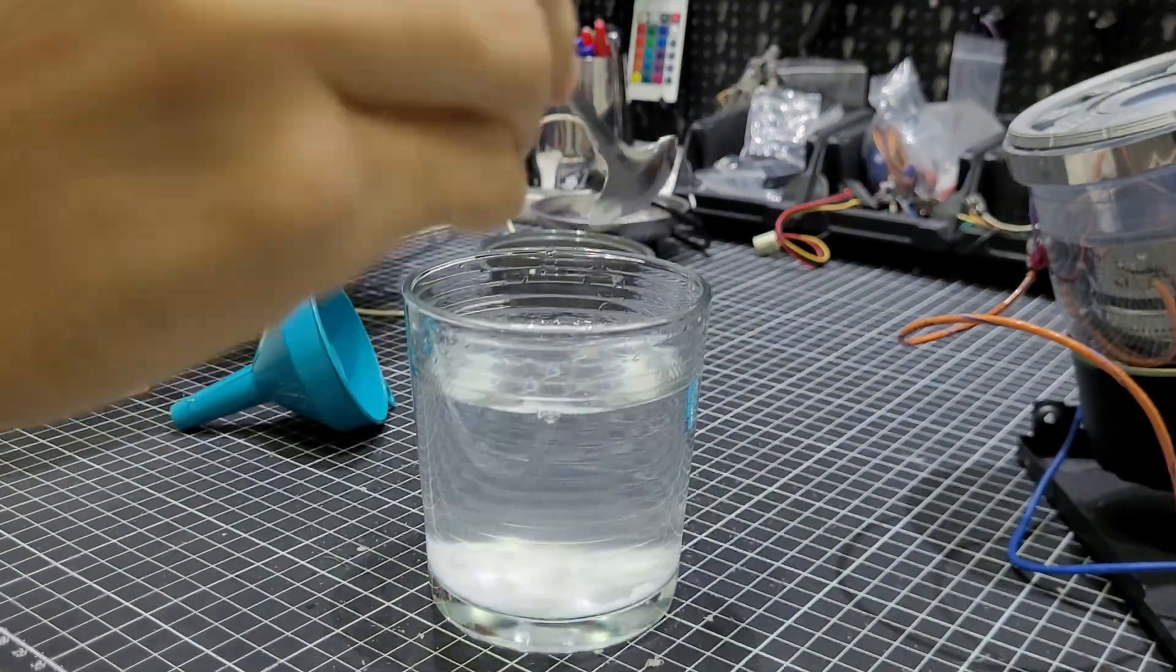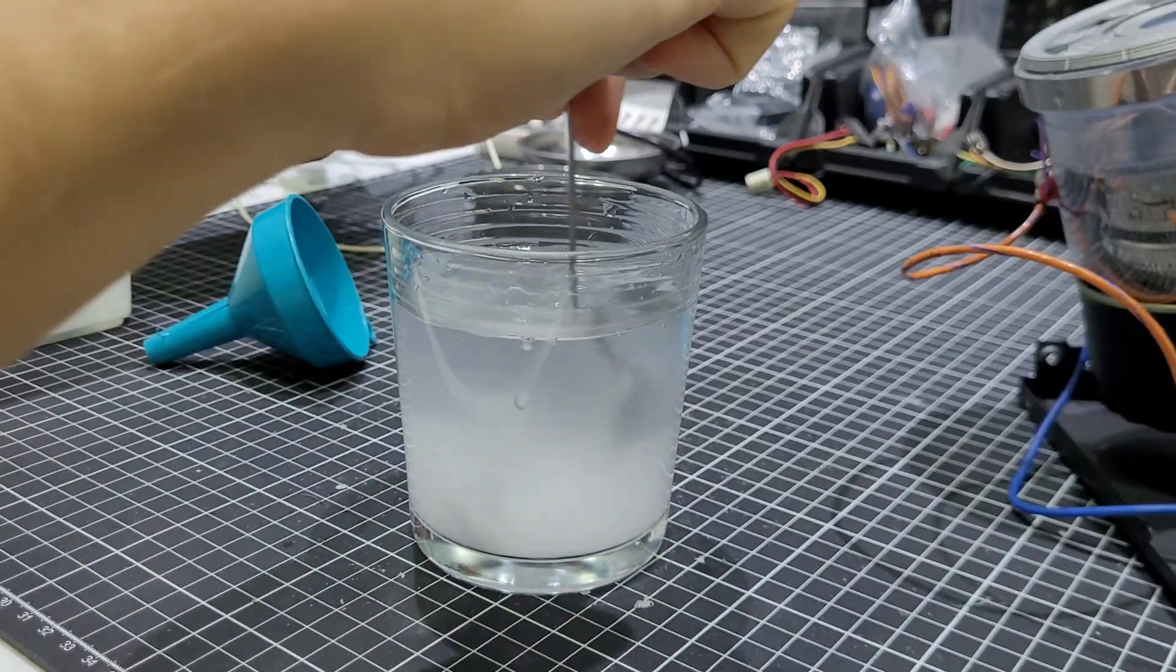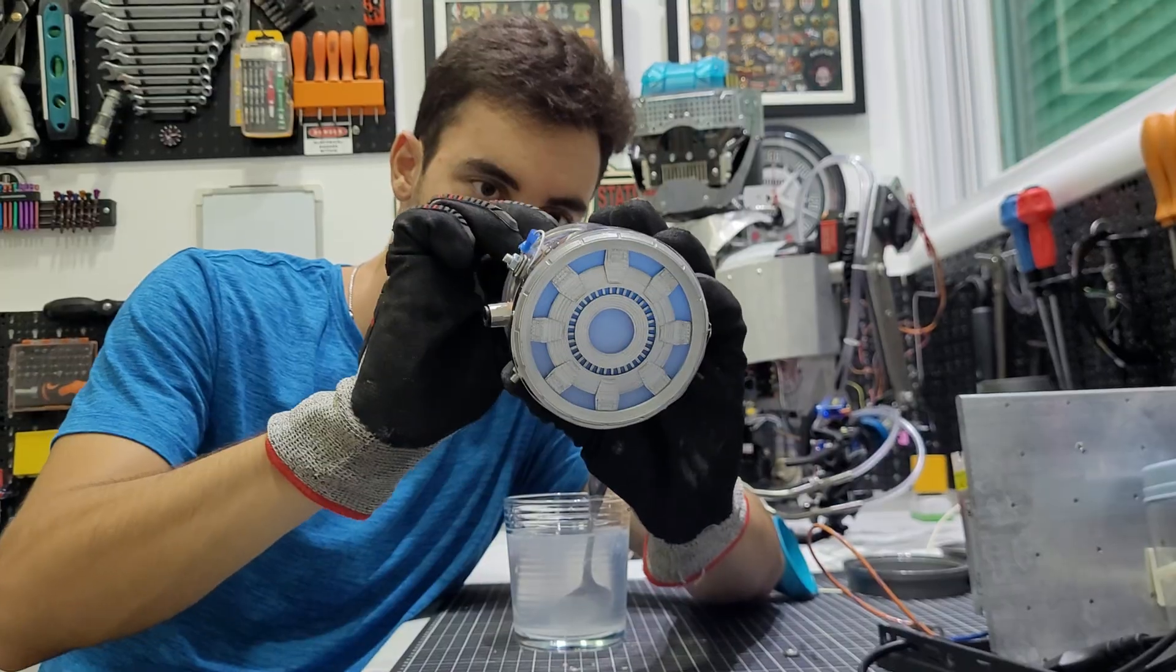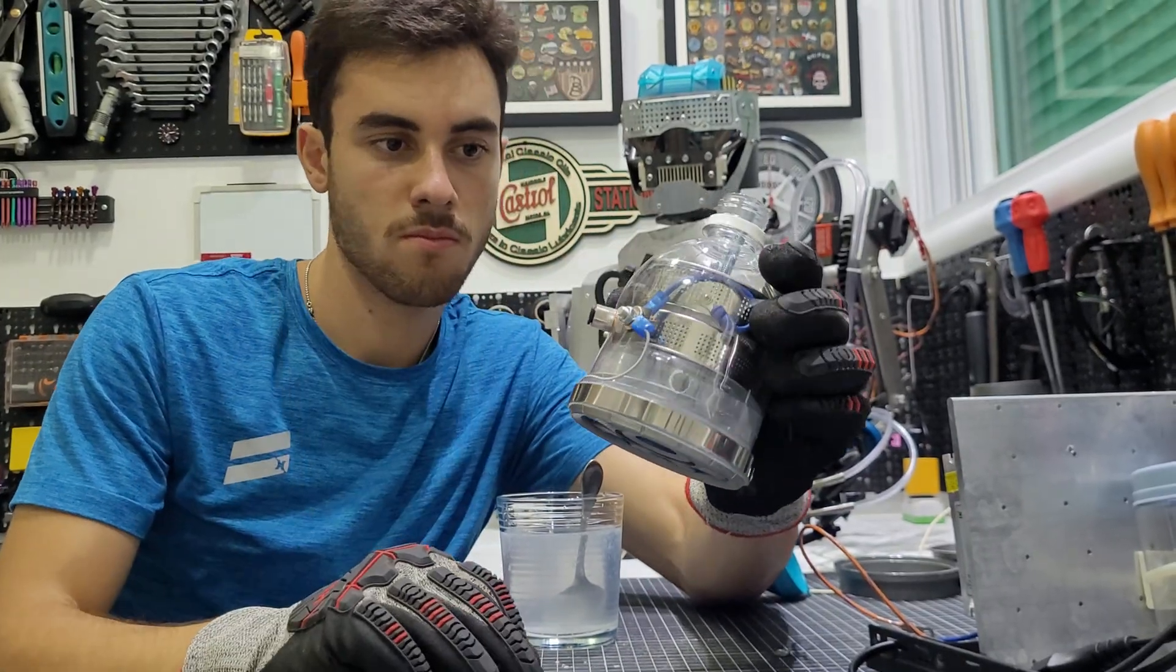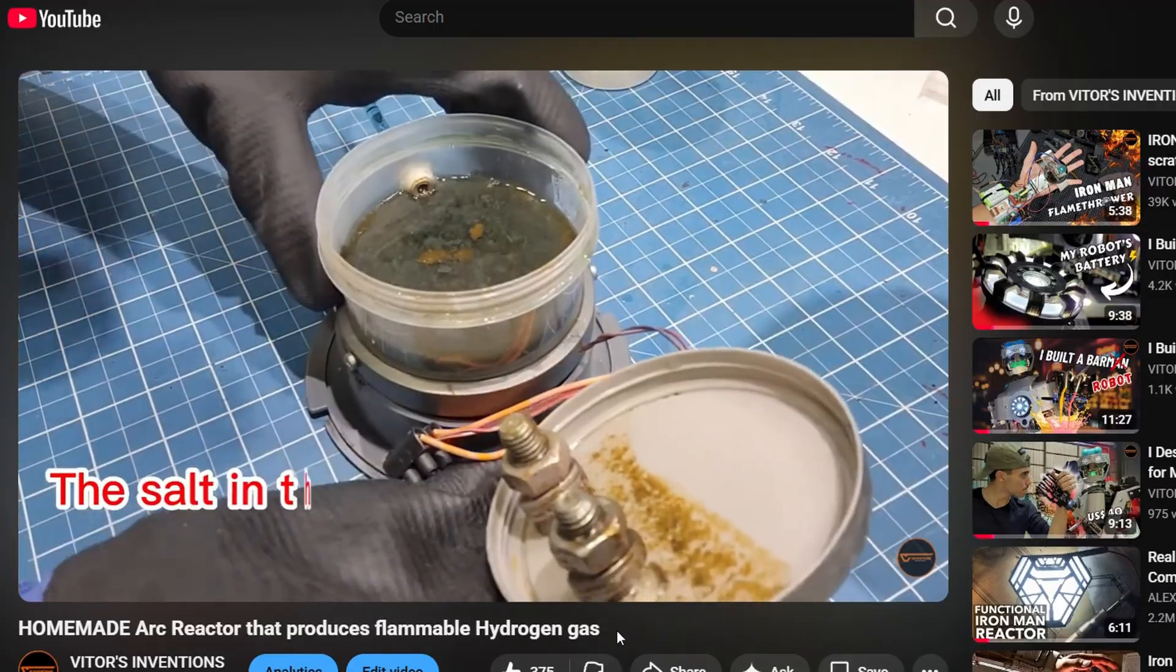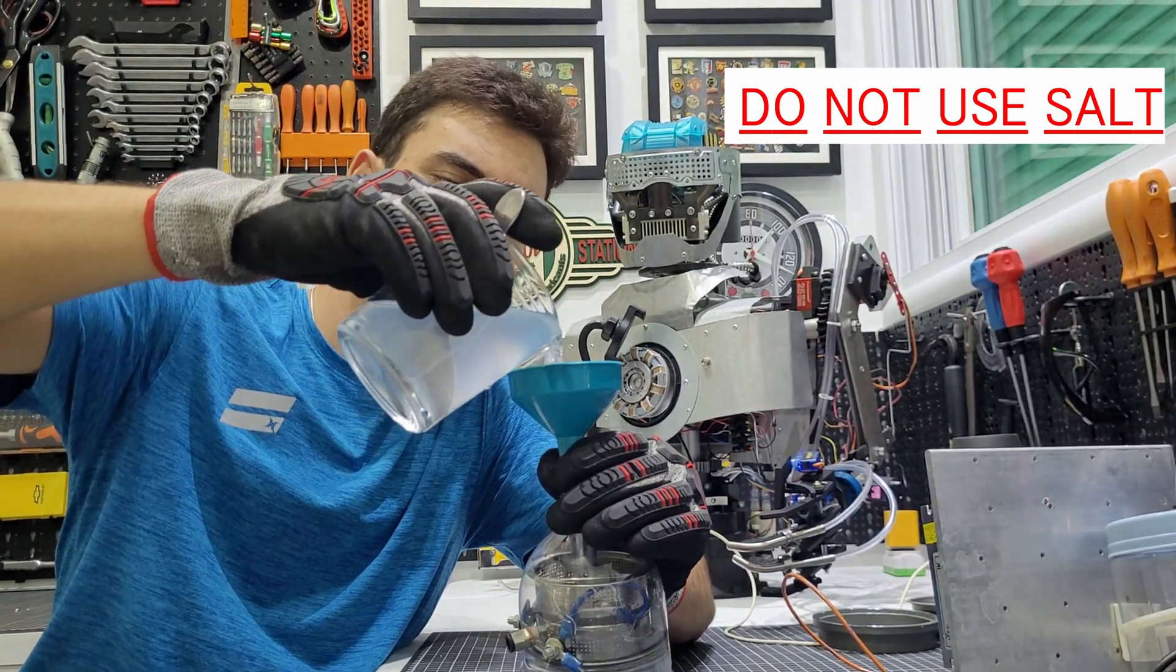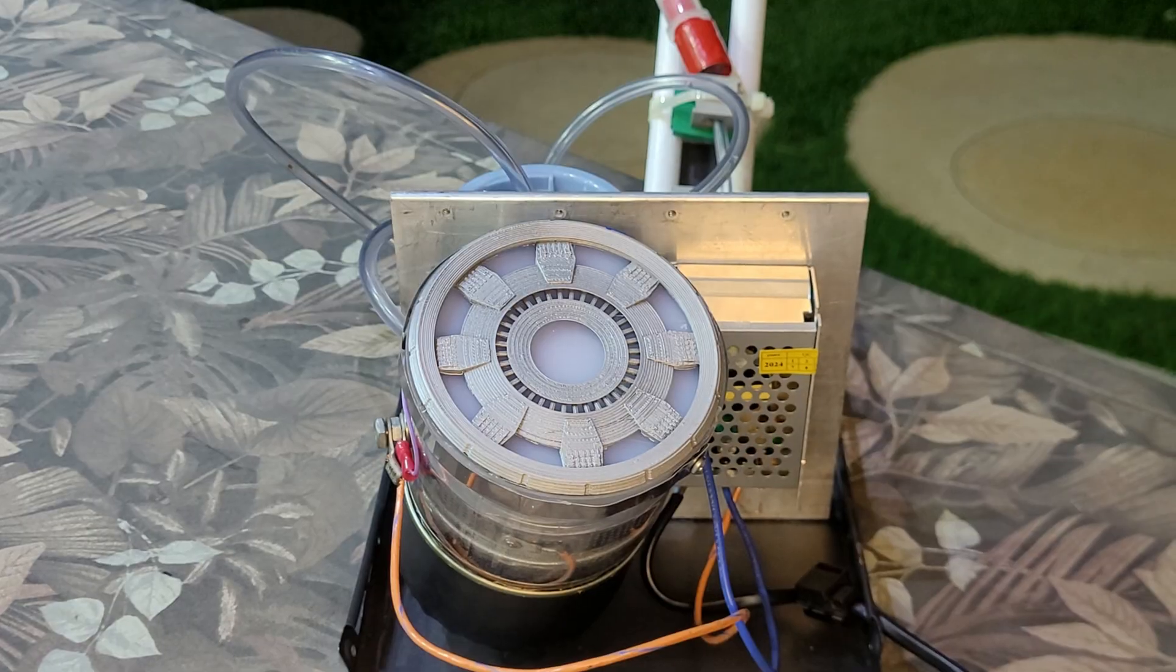To improve the conductivity of the water, I added two spoons of baking soda. And you could also use salt, but it would increase the metal corrosion. I don't really recommend it. At this point, I felt like an alchemist.